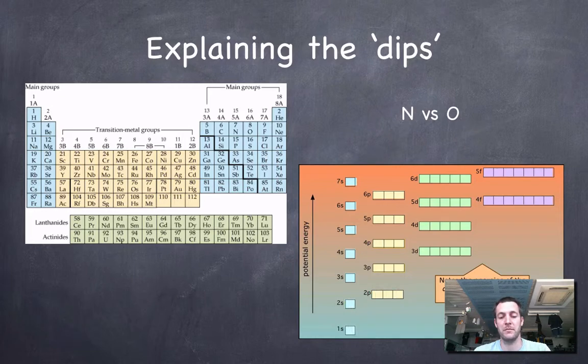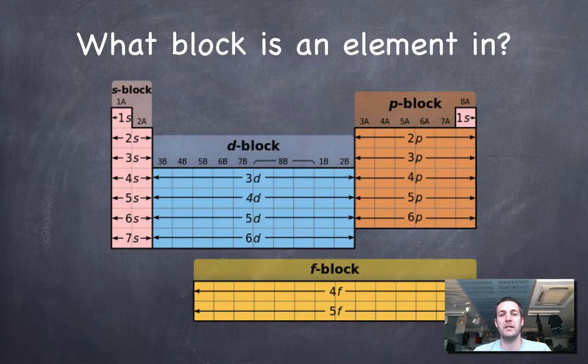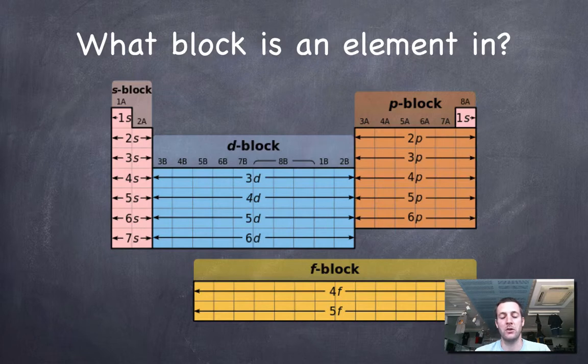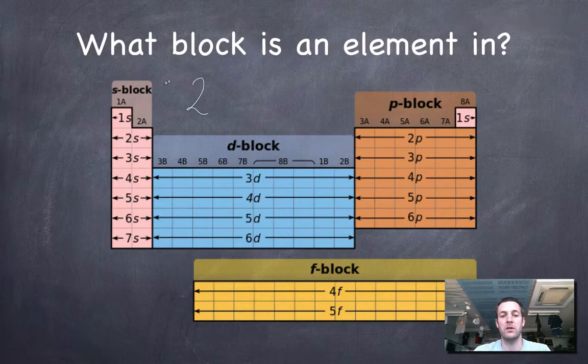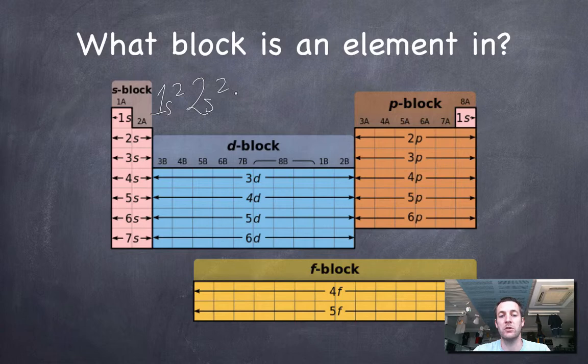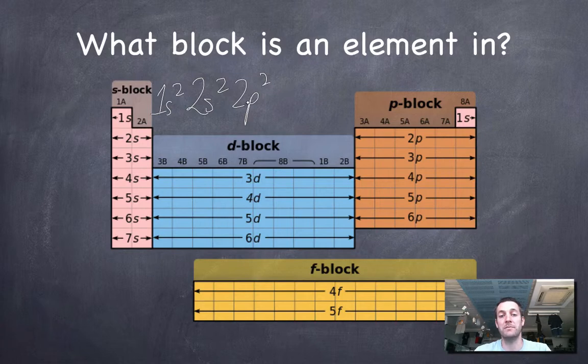Last thing I'm going to say in this film is about what block an element is in. This has to do with what your highest energy occupied orbitals are. So if for example I was carbon with 1s2 2s2 2p2, my highest occupied subshell is a p subshell, so I'm a p-block element.